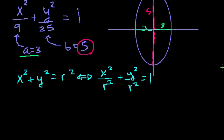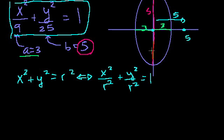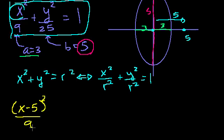Now let's look at something more complicated — shifting the ellipse. If we wanted to shift this ellipse to the right by 5, so the origin moves to x = 5, the new equation becomes (x − 5)² over 9 plus y² over 25 equals 1.